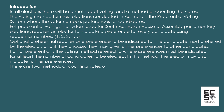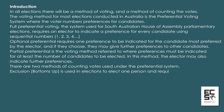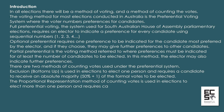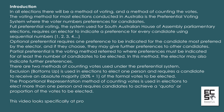There are two methods of counting votes used under the preferential system. Exclusion, or bottoms up, is used in elections to elect one person and requires a candidate to receive an absolute majority — 50% plus 1 — of the formal votes to be elected. The proportional representation method of counting votes is used in elections to elect more than one person, and requires a candidate to achieve a quota or proportion of the votes to be elected. This video looks specifically at the proportional representation method of counting votes.